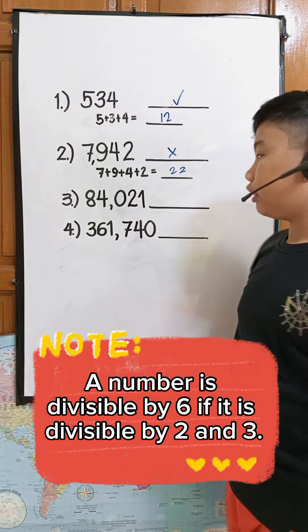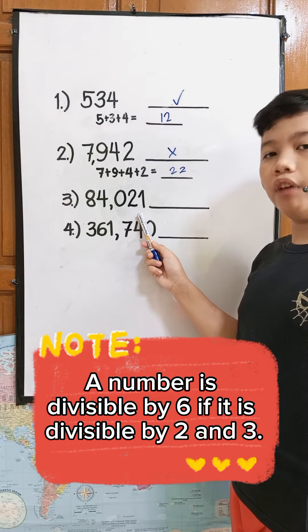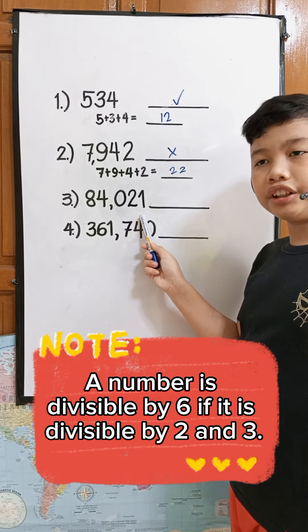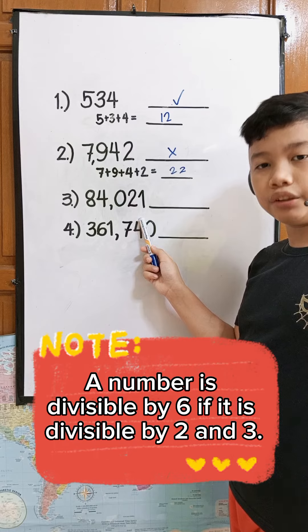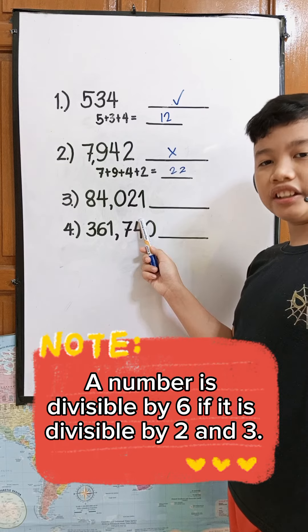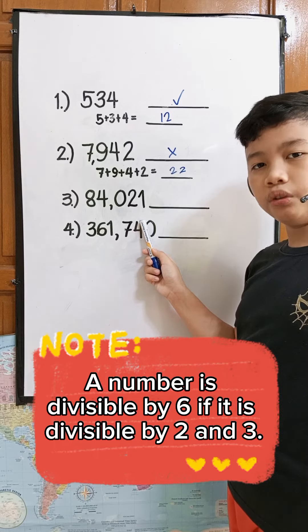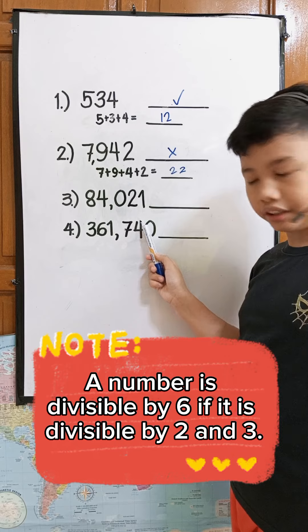Number 3. The ones digit is 1, and 1 is an odd number, which means that it's not divisible by 2. And since it is not divisible by 2, it is not divisible by 6.